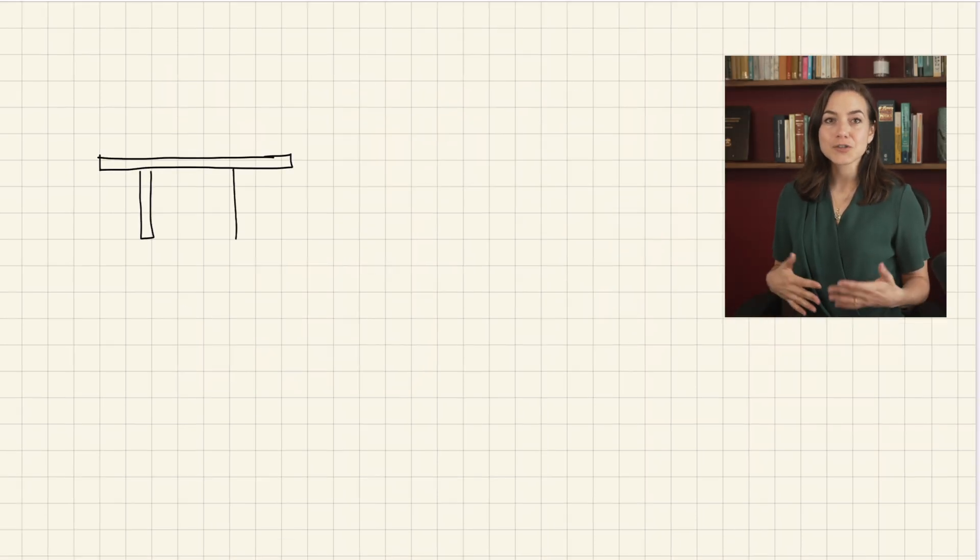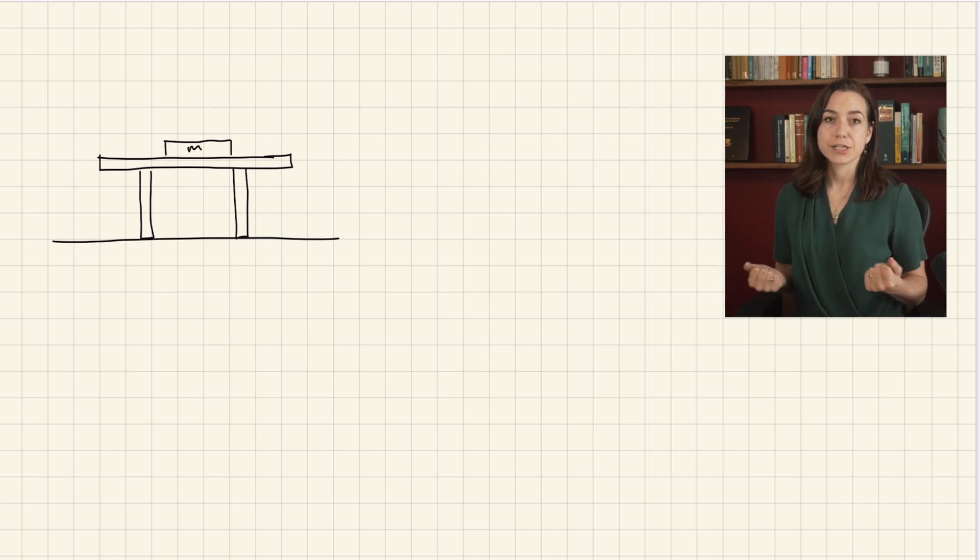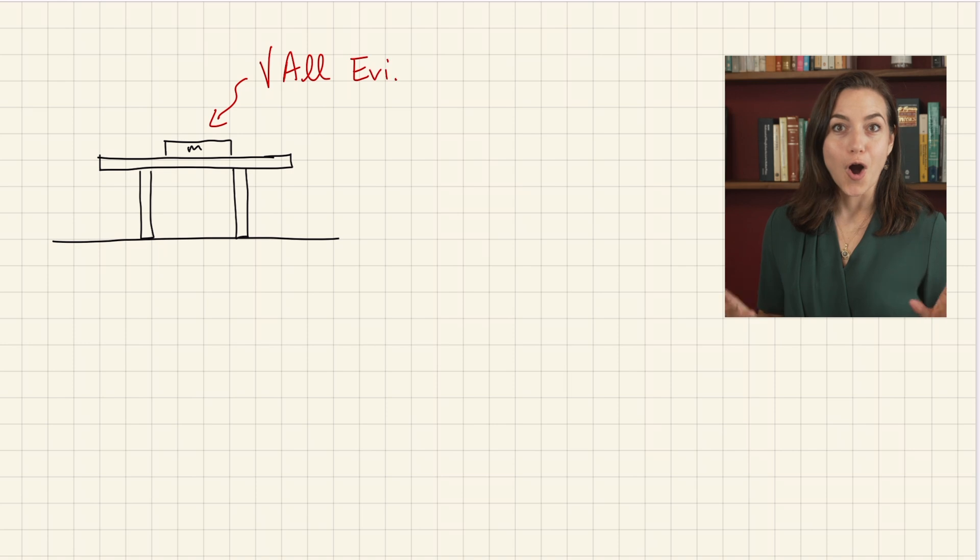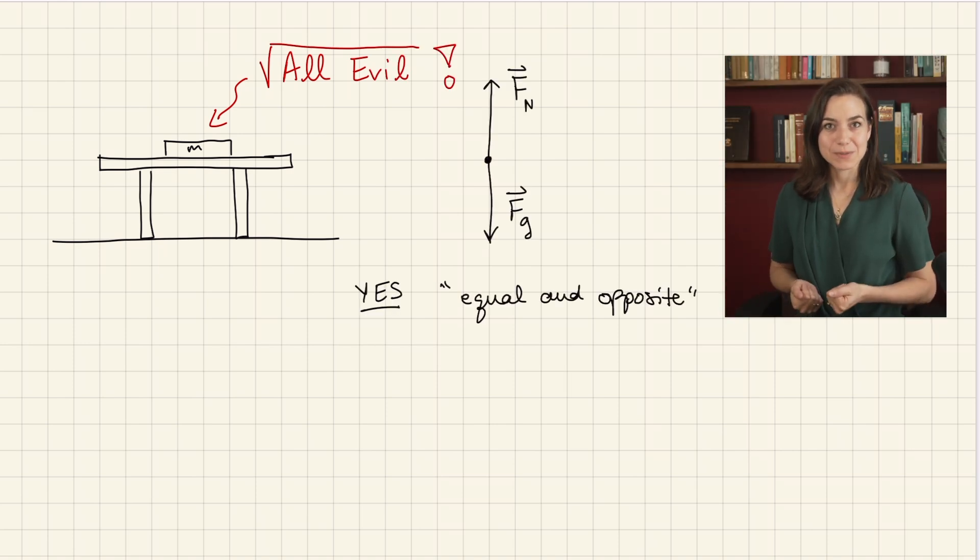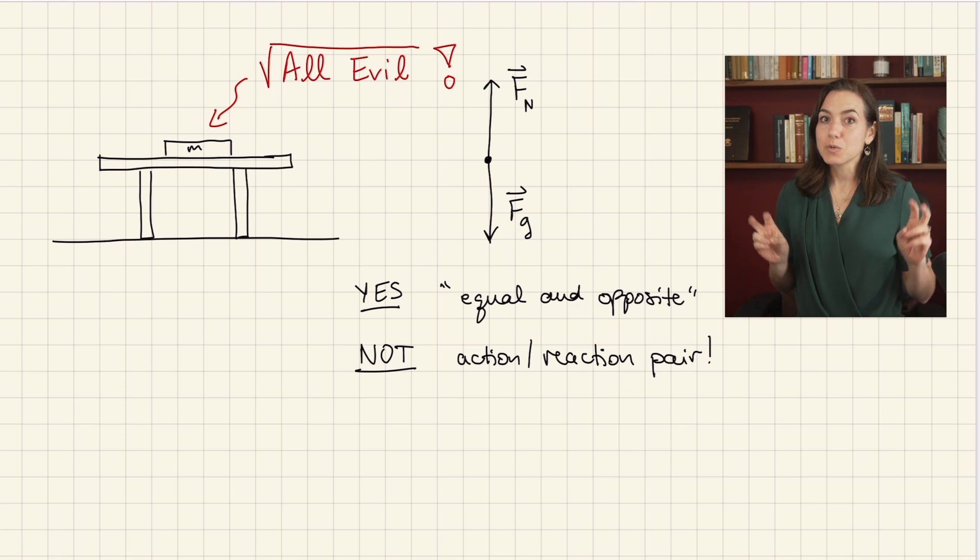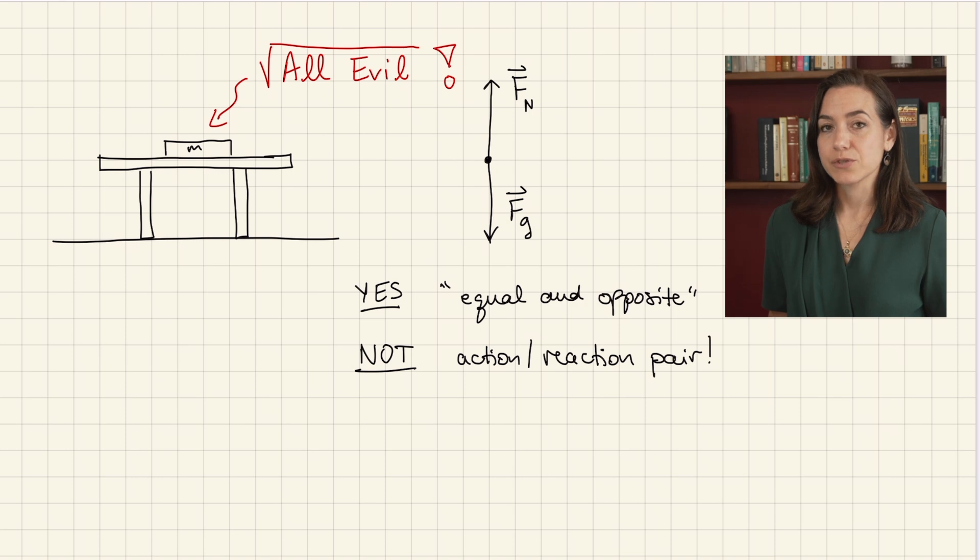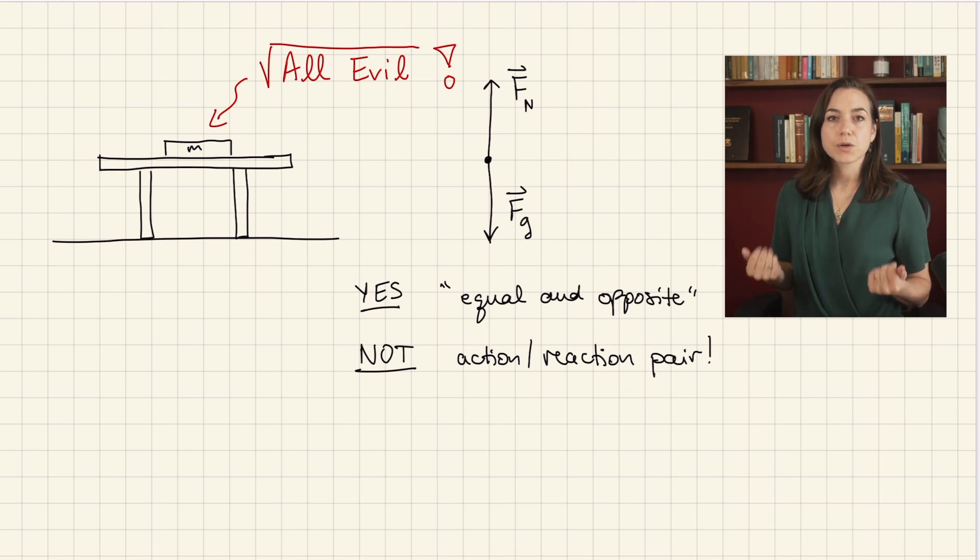I believe it stems from the quintessential early physics example of a book at rest on a stationary table. This is the root of all evil. In this case, Fn is equal and opposite to Fg, but not because of Newton's third law. But when students hear the words equal and opposite describing two forces, their minds naturally go to the third law, which they probably just learned recently. And unless great care is taken by the instructor to nip this incorrect association in the bud at this early stage, it takes root and leads to huge problems later on. This is by no means a trivial thing to do. None of the online resources, that I'm aware of at least, even mention this potential pitfall.